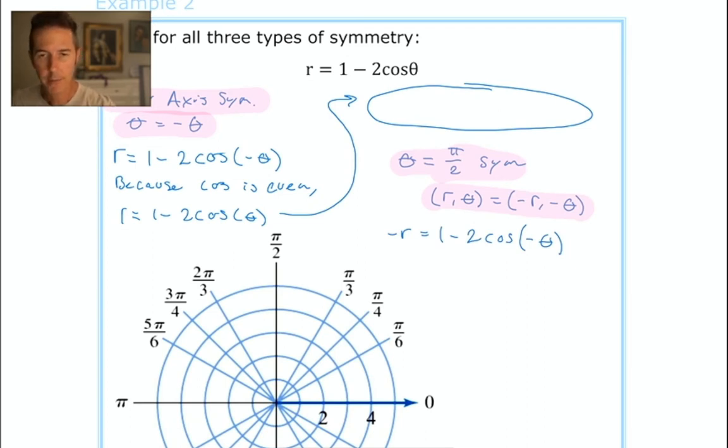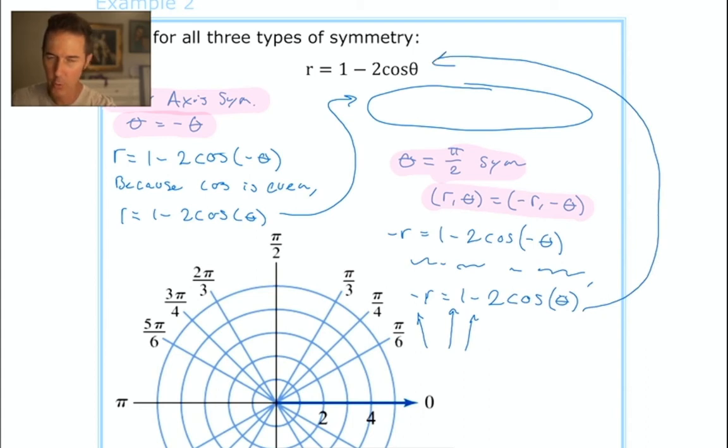We can change -θ to +θ because cosine is even: -r = 1 - 2cos(θ). The problem is the negative r - there's no way to remove it. I can't erase it, and if I multiply both sides by -1, the equation won't look like the original. We're stuck.